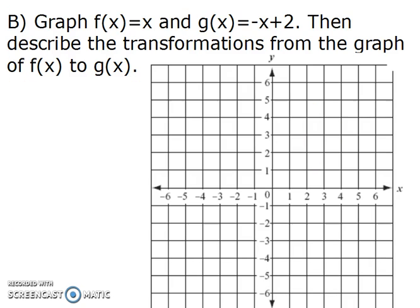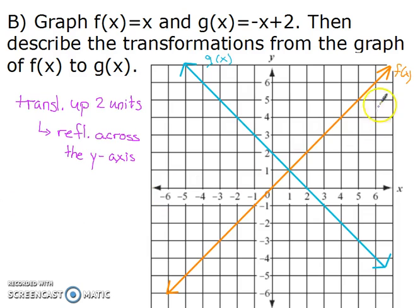Try this next one on your own. When you return to the video, the answer for the entire thing will be revealed. So, our original function is the orange f(x) and our g(x) is the blue and it translated up two units and reflected across the y-axis.